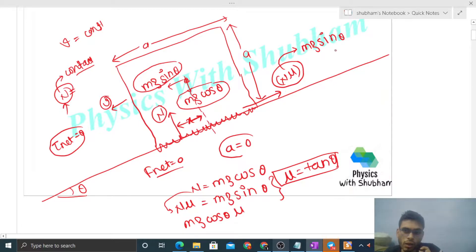This friction force has torque mg sin theta times its perpendicular distance from the center which is a by 2. So the torque is mg sin theta times a by 2 in the anti-clockwise direction.